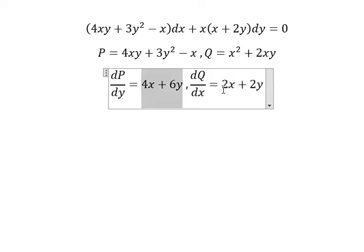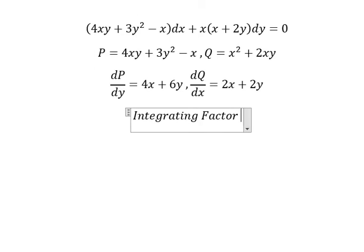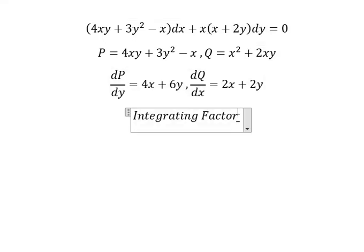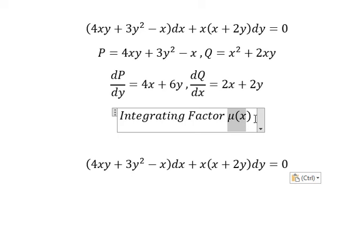Now this one is not equal to this one, so in this situation I need to create an integrating factor. If you look carefully, you can create the factor here. That's about dy — we need to create an integrating factor containing the variable of x, so that should be about μ(x). Now we need to multiply both sides by μ(x).